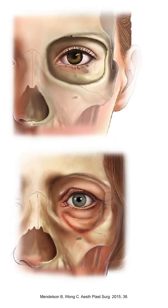The orbit consists of multiple bones which comprise your eye socket. With time, the opening of the orbit gradually expands in the upper inner and lower outside corners. This leads to loss of support for the medial brow, as well as the orbital ligaments, fat, and muscle.